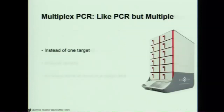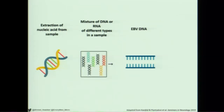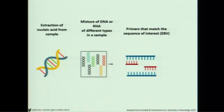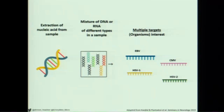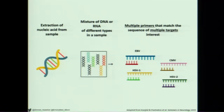How does multiplex PCR differ from standard PCR? Instead of one target — such as EBV DNA — we have multiple targets, which is why it's called multiplex. Instead of having one primer matching a specific target, we have multiple organisms we're trying to target. So instead of just EBV, now we have CMV, HSV-1, HSV-2, and multiple primers which can target those multiple organisms.